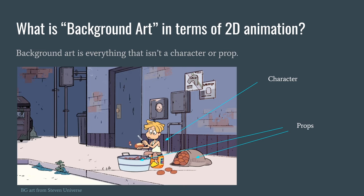In 2D animation, background art is everything that isn't a character or a prop. In this Steven Universe shot, the character peeling potatoes is not the background, and the bucket, potato peeler, potato, and bags of potatoes are all props — the rest is the background. You'll often notice a difference in line quality: props and characters have harder lines because they're animated, while backgrounds can have more painted lines, though not always.